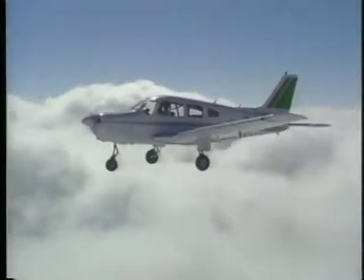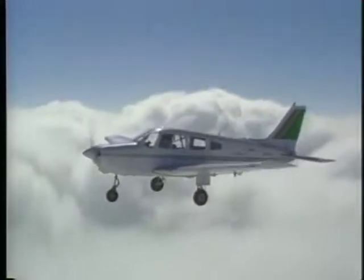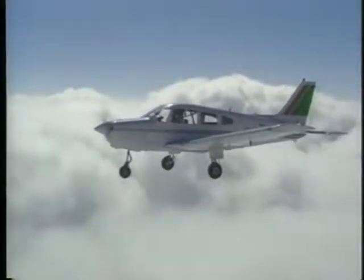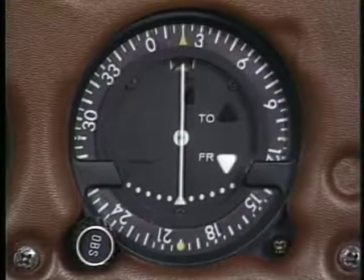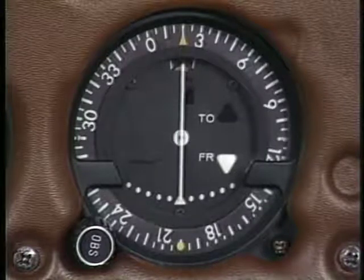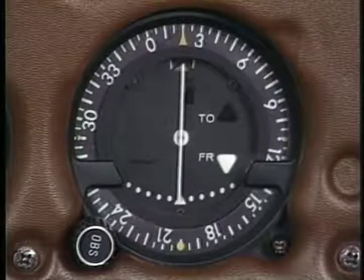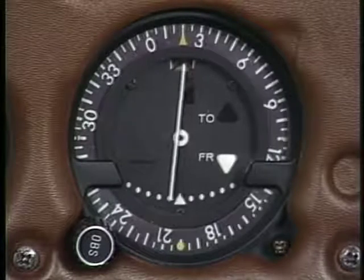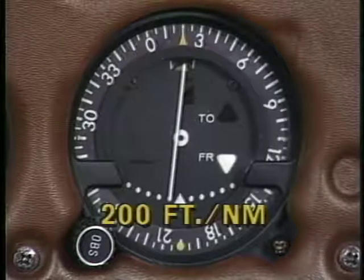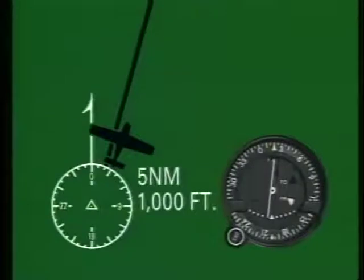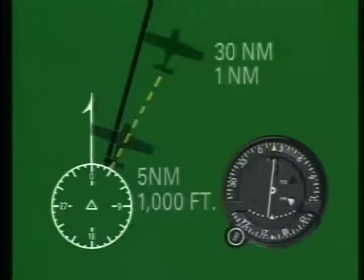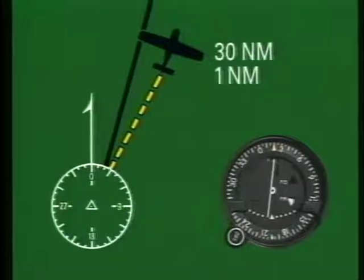Although the basics of VOR tracking and bracketing are the same for both visual and instrument flight, these skills need to be fine-tuned for IFR navigation. It is important to realize that, as you fly away from a VOR, a deviation from your desired course represents a greater lateral distance. Each dot represents a lateral distance of 200 feet for every nautical mile you travel away from the VOR. For example, at five miles from the VOR, a one-dot deviation means you are about 1,000 feet away from the course. But at 30 miles, this same deflection places you about a mile off course.